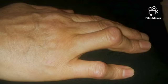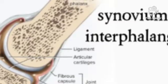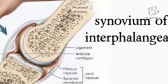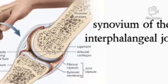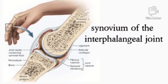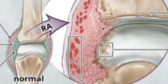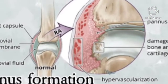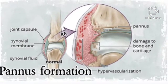In RA, the lining of the joints called the synovium is attacked by the body's immune system cells. The synovium normally produces fluid that allows the joints to smoothly glide on their cartilage covers. When this inflammation causes the synovium to swell, a fibrous layer of abnormal tissue called pannus forms and releases harmful chemicals.